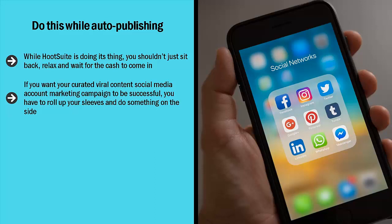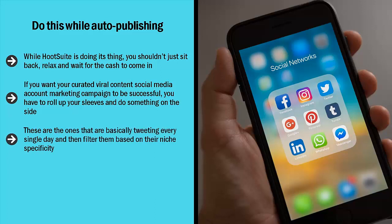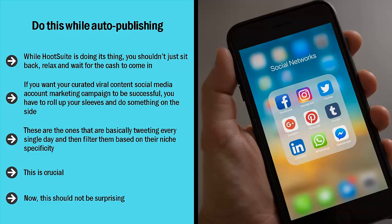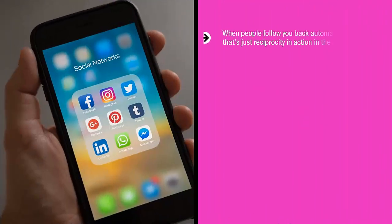Look for competitors' accounts on Twitter — you should already have a list of these. Look at their followers and pay attention to the most active ones, those tweeting every single day, then filter them based on niche specificity. Look at their Twitter feeds: what do these followers normally tweet about? If you can see a tight correlation between your content and the stuff they are constantly tweeting or retweeting, follow them. When people follow other accounts, a certain percentage will follow them back — it's reciprocity. When people follow you back on Twitter, that's reciprocity in action in the digital world.